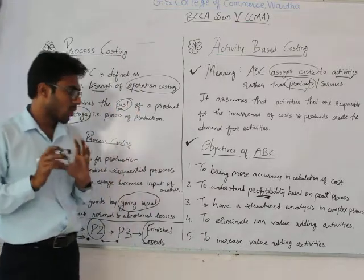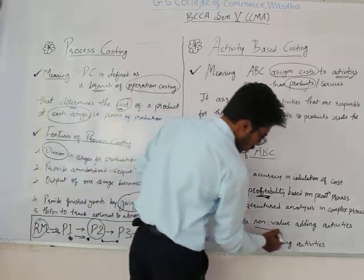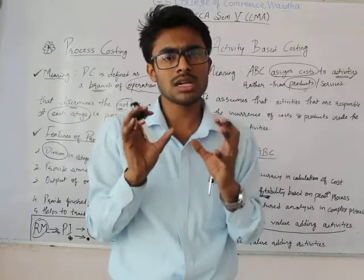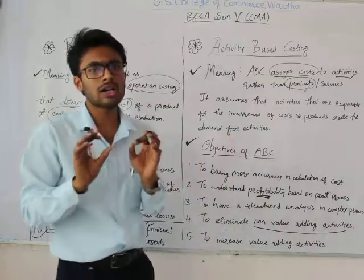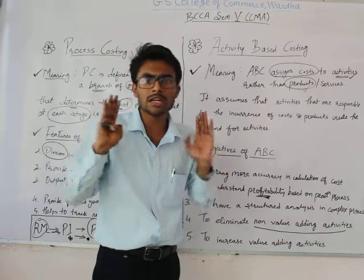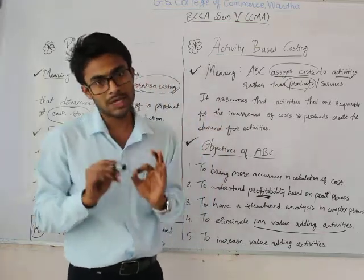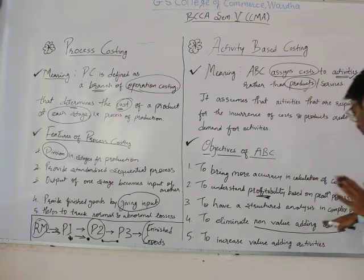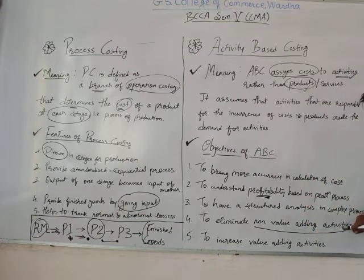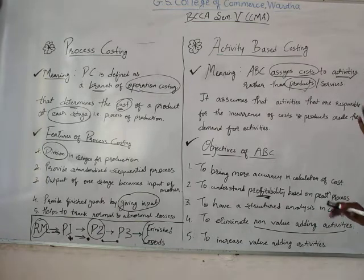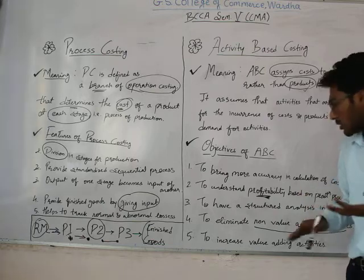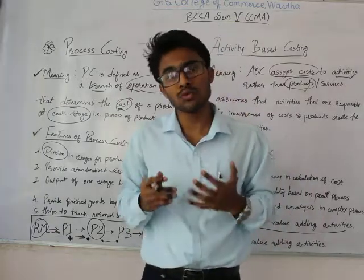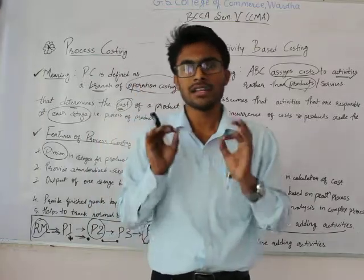The fourth objective is to eliminate non-value-adding activities. Activities that do not contribute to adding value can be eliminated through ABC. And the fifth point is to increase value-adding activities — once non-value-adding activities are eliminated, we can easily analyze which activities are the value-adding ones.